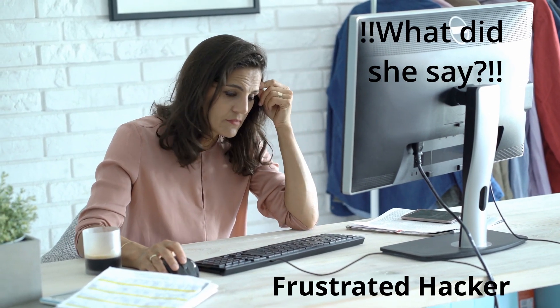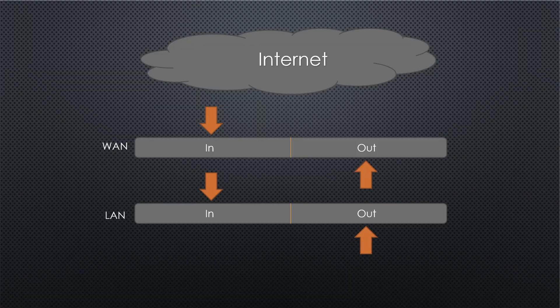Firewall rules can be applied at the front door and at the back door of your house. As someone's coming through the front door on the WAN port — your wide area network or internet-facing port — you have the option to screen them at that first step. Then, if somebody in your network is trying to leave, you have the ability to screen them there as well. So you have this two-tiered in-and-out section for each interface in your network.